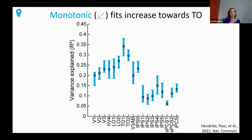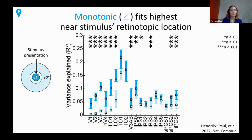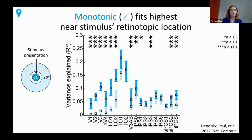Where is our monotonic model fitting well? On the y-axis is how well our model fits the fMRI data; on the x-axis are visual field maps ordered from posterior to anterior. In the early visual areas, the monotonic model fits well, and fits increase toward TO — in line with previous findings — then we see a drop-off. Because these areas are retinotopically organized, we found that monotonic model fits are highest near the retinotopic location of the stimulus, showing that these fits are very location-dependent.